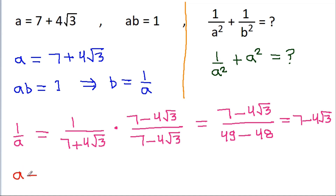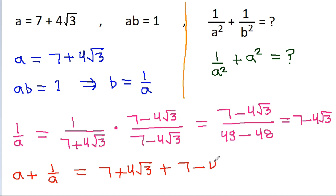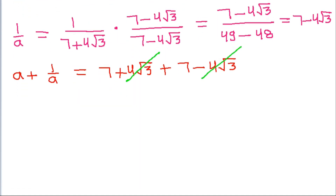So we have a plus 1 by a is equal to: a is 7 plus 4 root 3, plus 1 by a which is 7 minus 4 root 3. The 4 root 3 terms cancel and we get a plus 1 by a is equal to 7 plus 7, which is 14.